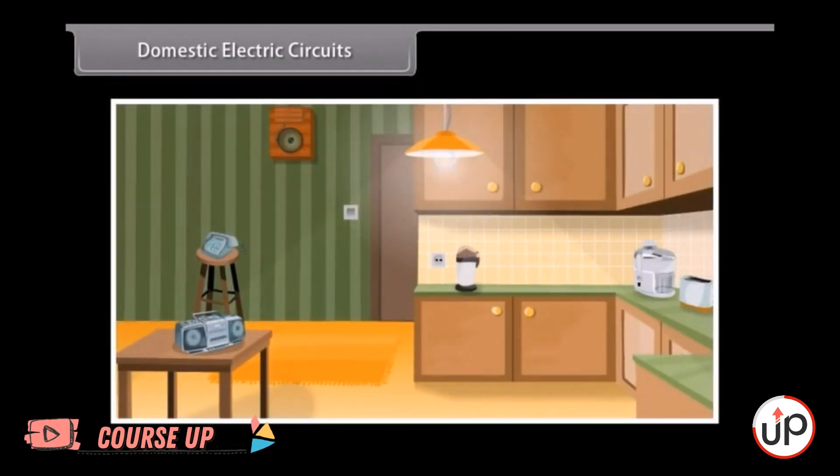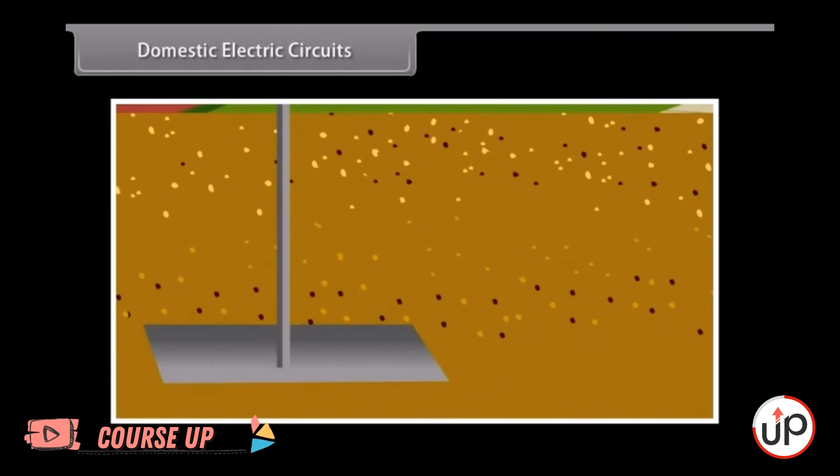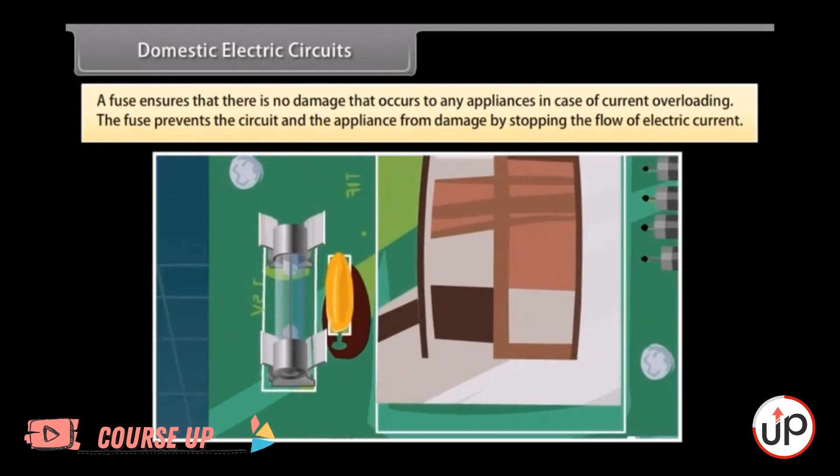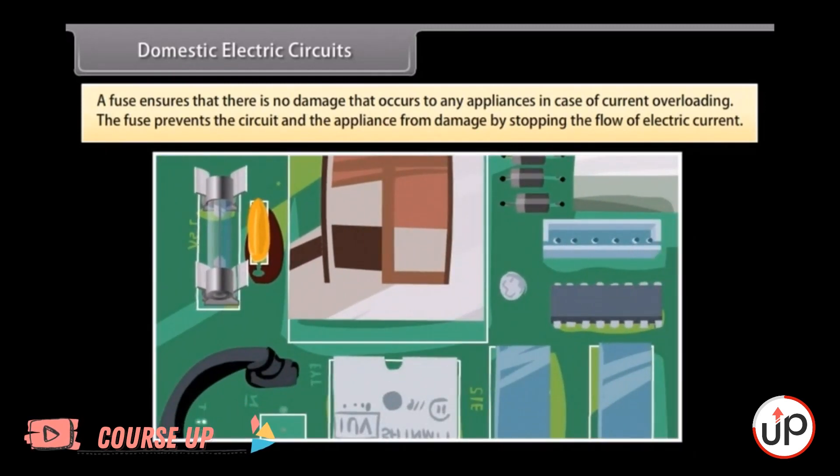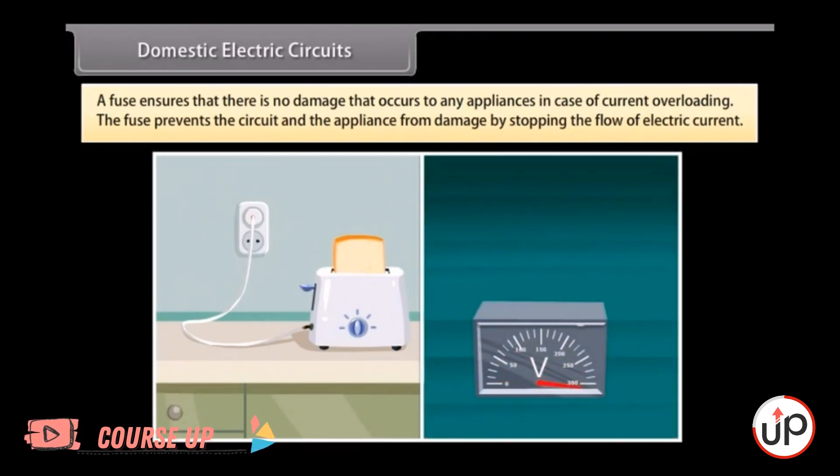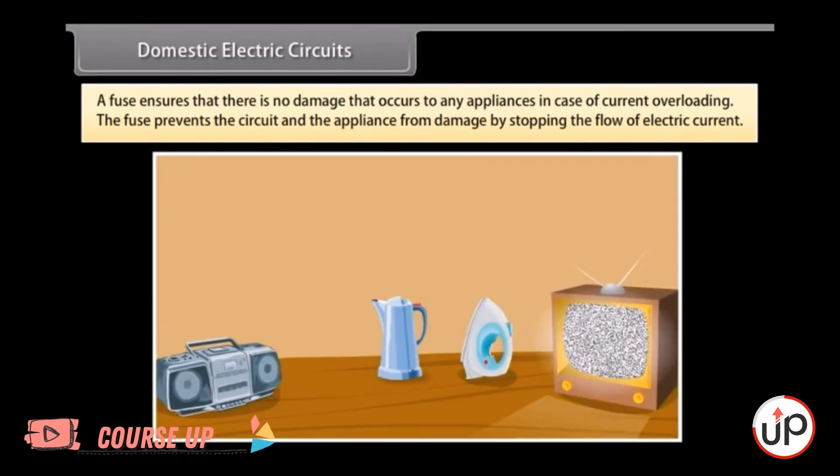There are different circuits used for different appliances being used in the house. The earth wire is connected to a metal plate deep into the earth to avoid receiving any severe shock in case of any leakage of current while using the appliances. A fuse is an important part of all circuits. It ensures that there is no damage that occurs to any appliances in case of current overloading. Overloading occurs when the live wire and the neutral wire come in contact with each other or there is a rise in the supply voltage. In this case, the fuse prevents the circuit and the appliance from damage by stopping the flow of electric current.